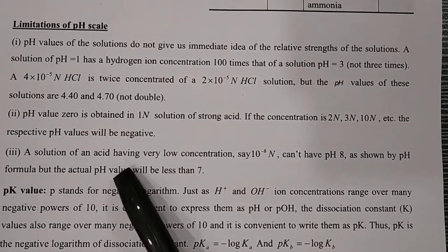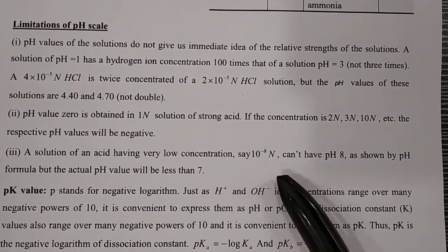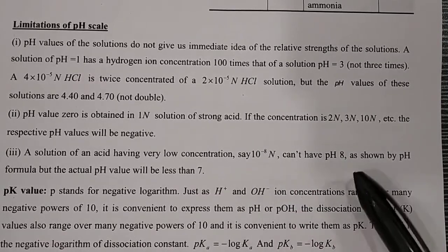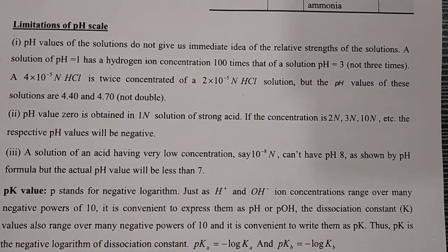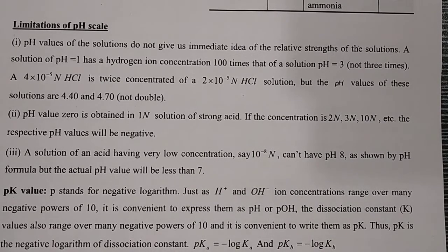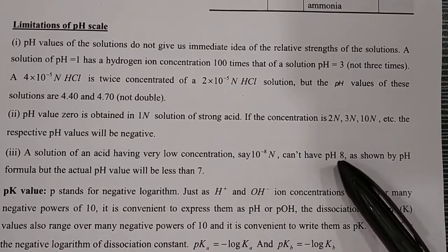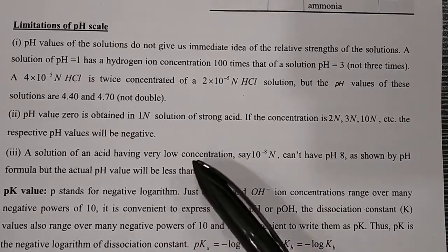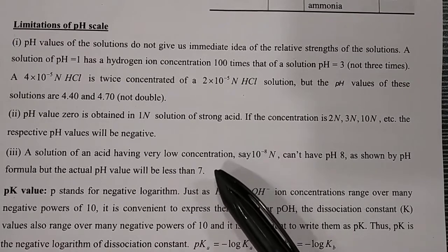Third limitation: A very dilute acid solution of 10⁻⁸ N cannot have a pH of 8, as shown by the pH formula. The actual pH value is less than 7. If the acid solution gives pH 8, it would be basic — which is a contradiction. So these are the three limitations of the pH scale.